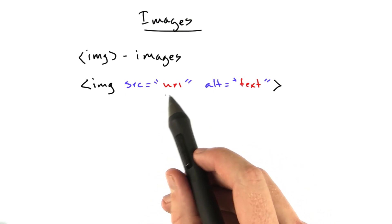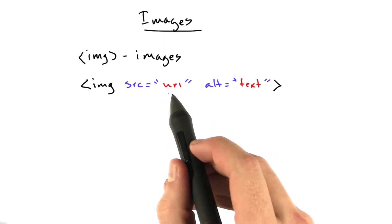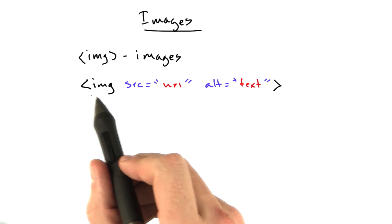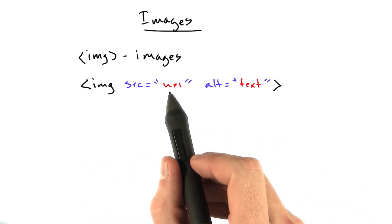Remember we talked about how the web service can serve all sorts of different types of content? If you're going to serve an image, this is how you would do it. You would include it in an image tag in HTML, and you reference the URL.